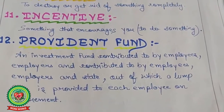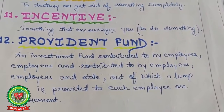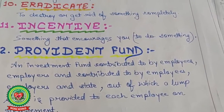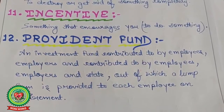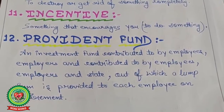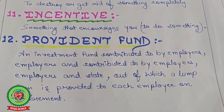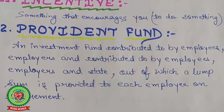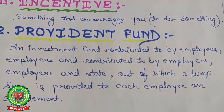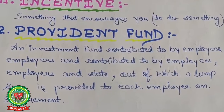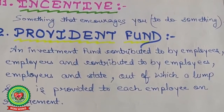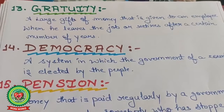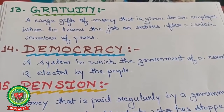Twelfth word: provident fund — an investment fund contributed to by employees, employers, and the state, out of which a lump sum is provided to each employee on retirement. Simply, the employer, state, and even the employee contribute from the salary, and at the end the whole lump sum is provided to the employee at the time of retirement. Next word: gratuity — a large gift of money given to an employee when he leaves the job or retires after a certain number of years.